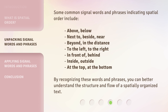Some common signal words and phrases indicating spatial order include: above, below, next to, beside, near, beyond, in the distance, to the left, to the right, in front of, behind, inside, outside, at the top, and at the bottom.